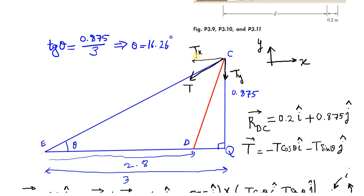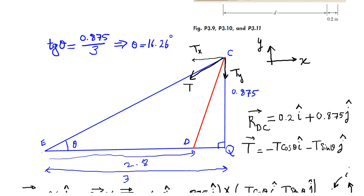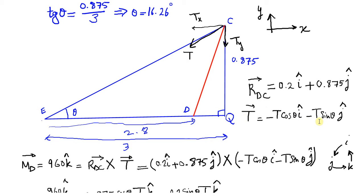According to this coordinate system, I can express the vector T as minus T cosine(theta) i — because it's in the negative X direction — and minus T sine(theta) j. Then I show the position vector RDC from D to C: it's 0.2 in the X direction and 0.875 meters in the Y direction, so RDC equals 0.2i plus 0.875j. We know the moment equals the position vector cross product the force vector, so this cross product must equal 960 Newton-meters.